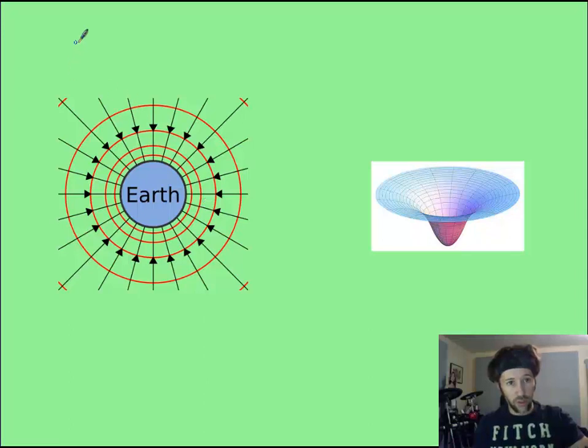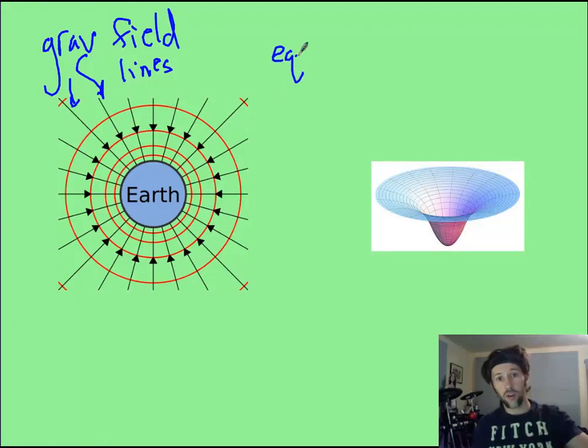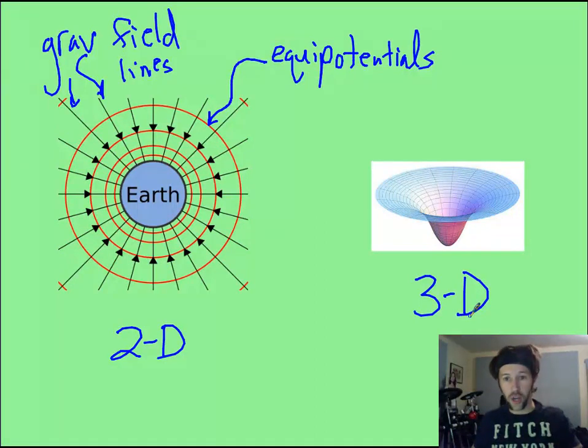Just to make sure you understand, the radial lines are your gravitational field lines, these things here. The circles are your equipotentials. Things tend to orbit quite well along equipotentials, because it's all the same surface. Now this is in two dimensions. If you try and look at it in 3D, it's a little bit cooler, because then you have that funnel shape.